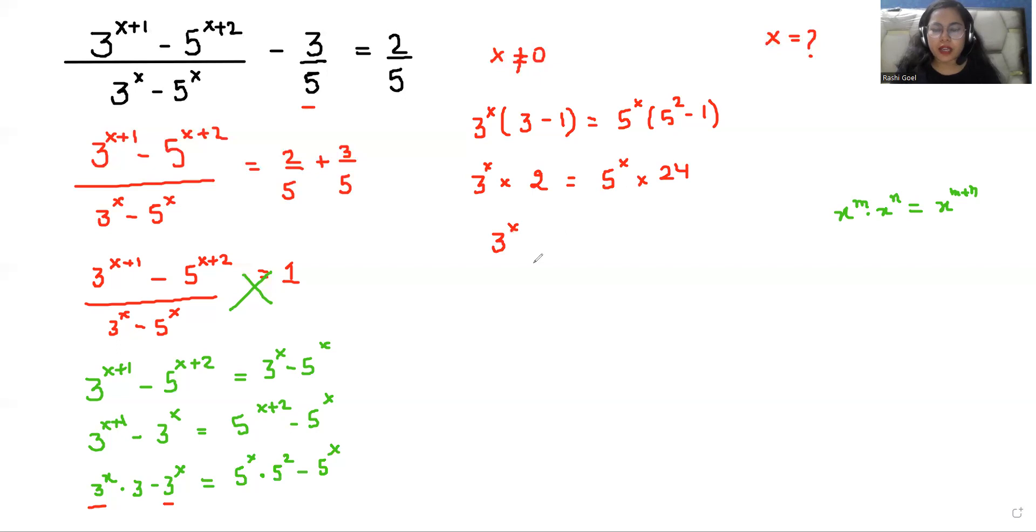3 power x, I will take the x terms here. 5 power x is equals to 24 by 2. 3 power x over 5 power x is equals to 12.